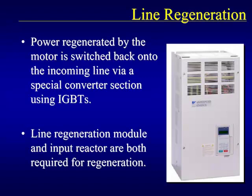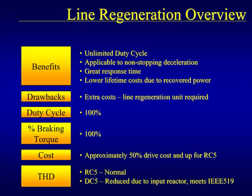A special type of braking called line regeneration is also available. As the motor regenerates during braking, the regenerated power is sent back to the drive's input power lines through an active converter using IGBTs. In order to use line regeneration, an additional line regeneration module and input reactor are both required. Except for the drawback of additional cost, line regeneration is by far the most superior method of braking. Because the regenerated power is transferred back to electricity and not heat, the duty cycle is continuous. Also, because the regenerated power is sent back to the power source, it can be recovered and actually reduce the lifetime cost of the unit.